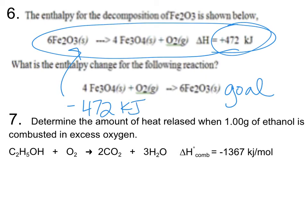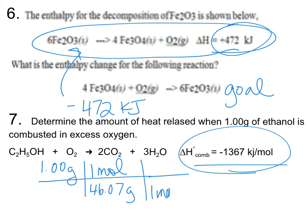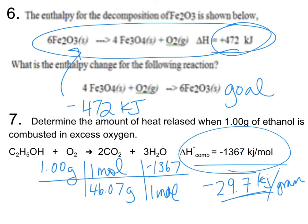The final one: determine the amount of heat released when one gram of ethanol is combusted. They give us a balanced equation for ethanol and we're going to combust one gram. We start our dimensional analysis with one gram of ethanol. For every one mole of ethanol the molar mass comes out to be 46.07 grams. And there's a one-to-one relationship, so for every one mole of ethanol we have negative 1,367 kilojoules. Our final answer is negative 29.7 kilojoules released per gram of ethanol.